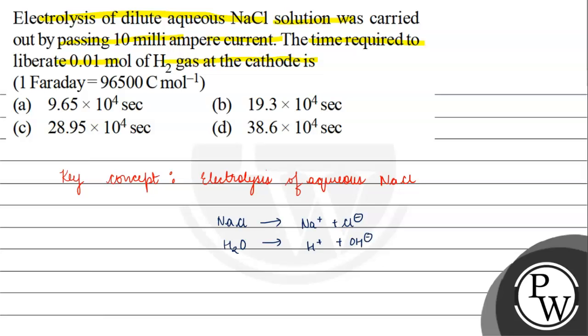Since H⁺ has higher ionic mobility than Na⁺, it will go to the cathode to discharge. At cathode: 2H⁺ + 2e⁻ → H₂.